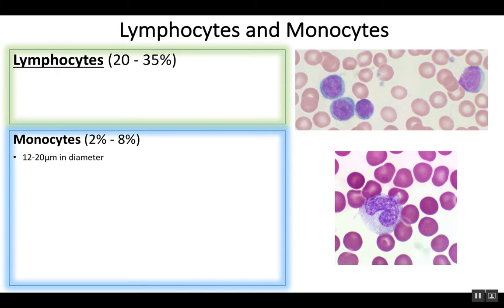Agranular leukocytes lack visible granules in their cytoplasm. Granules are little vesicles that contain molecules. The two major agranular leukocytes are the lymphocytes and the monocytes.